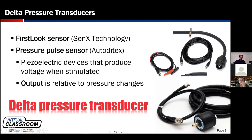The next device is a delta pressure transducer. What does the word 'delta' mean? Relative difference — or change. Delta means change, and these devices are very sensitive to change. They are not capable of delivering a voltage output that equates to a pressure value — they only show pressure changes. They can see really fast activity, these pressure changes in whatever area they're sampling from, and give excellent diagnostic information.